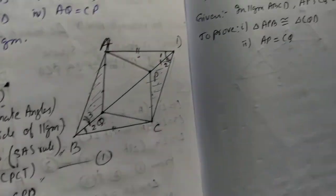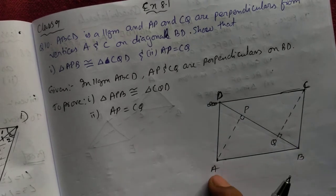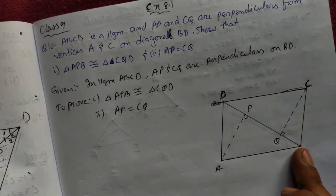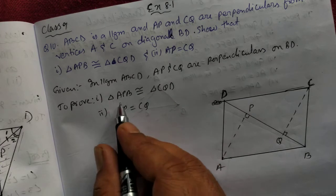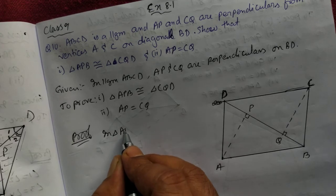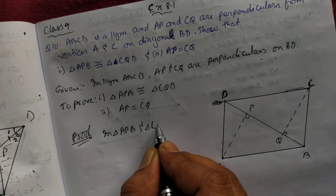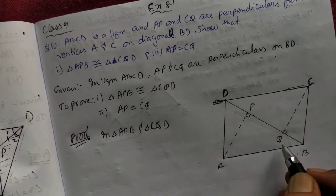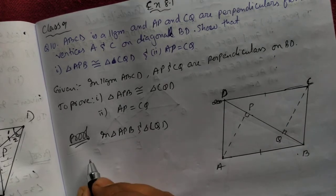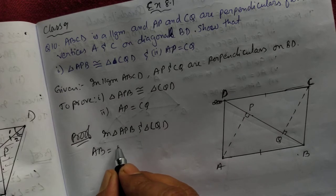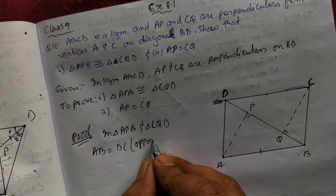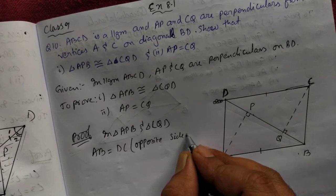Let's do question number 10. ABCD is a parallelogram and these are the perpendiculars on the diagonal. We are going to prove these triangles are congruent. In triangle APB and triangle CQD, find three equal things. One: the opposite sides are the same. So we can write AB equal to DC. Reason: opposite side of parallelogram.